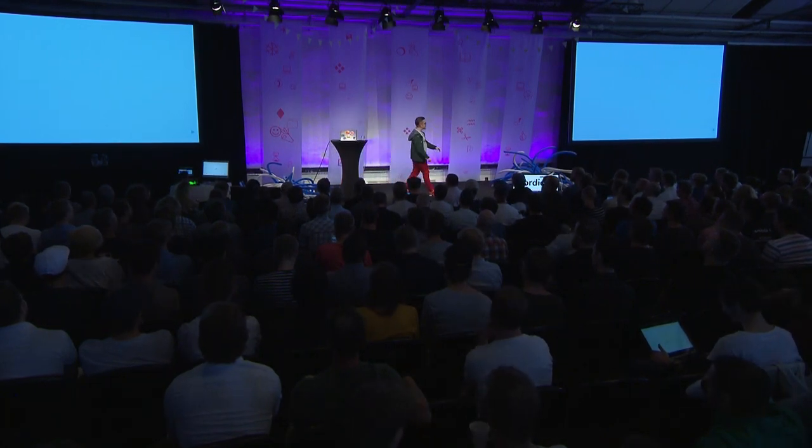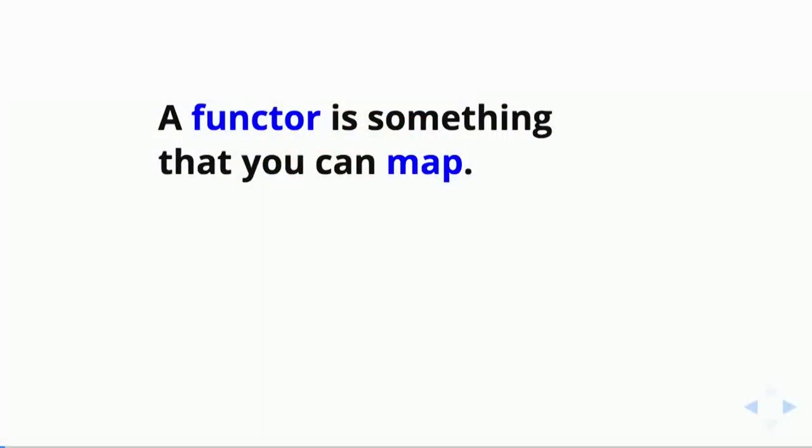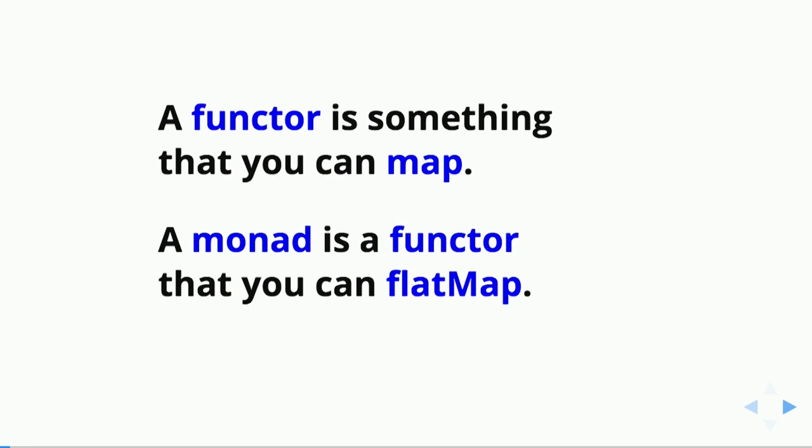Like any good monad talk, I'm going to begin by showing you a slide that you will not understand at all — but that's okay. During this talk we're going to work together to understand this slide. If you understand it right away, you can go take a break and have a cup of coffee, because then you already understand everything I'm going to tell you today. The two sentences on this slide are: a functor is something that you can map, and a monad is a functor that you can flat map.